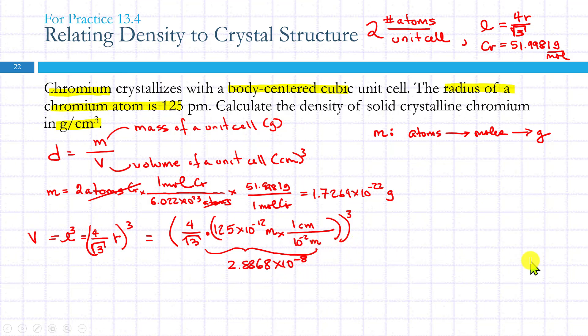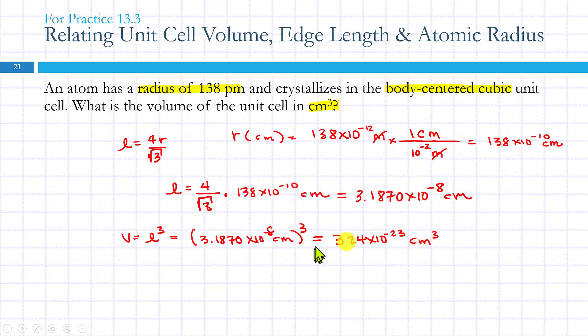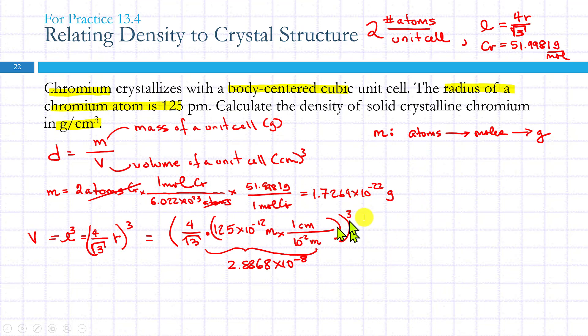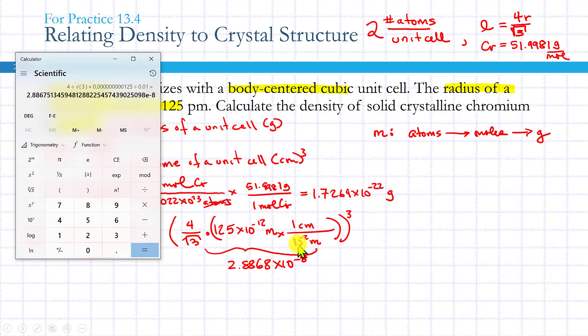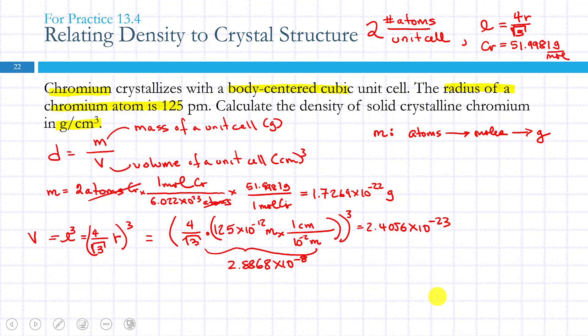So I'm left with just cubing that number in order to get to the volume. This would have been the same as the result that we did here. Cubing that number—I'll just raise it to the third power—comes out to 2.4056 times 10 to the minus 23rd.